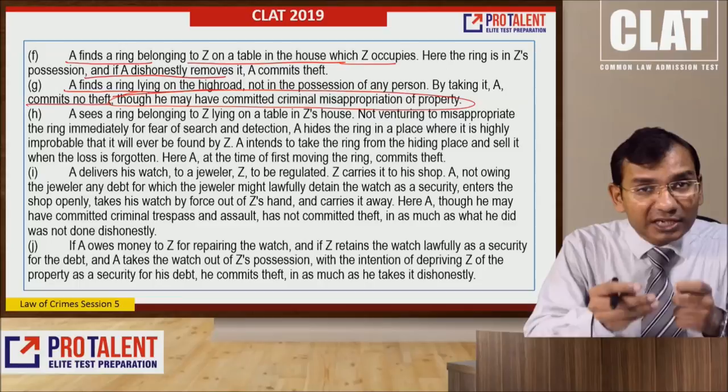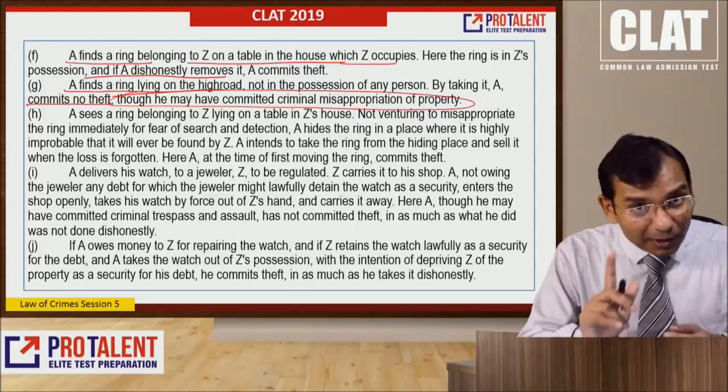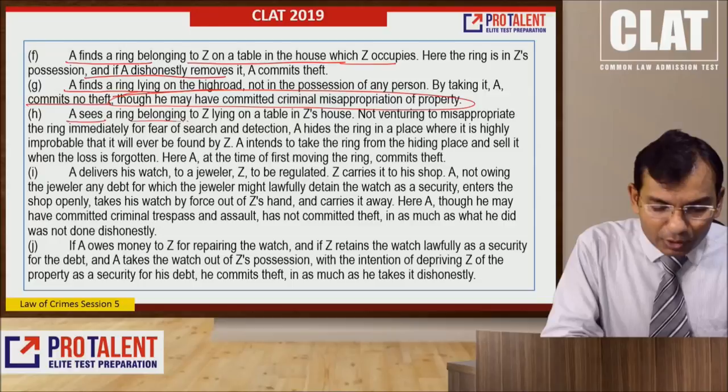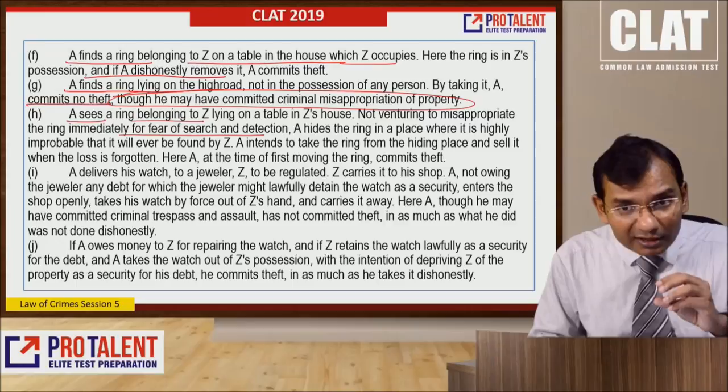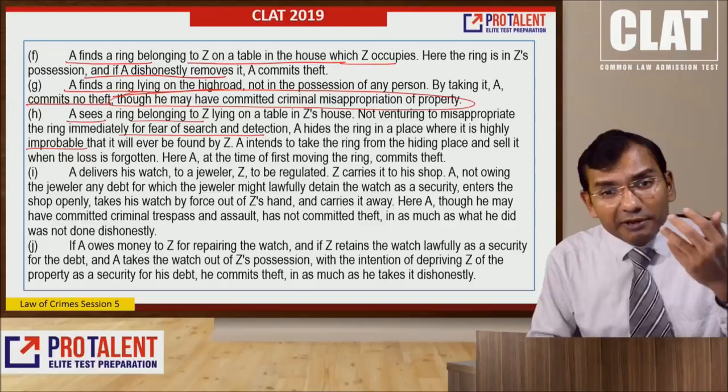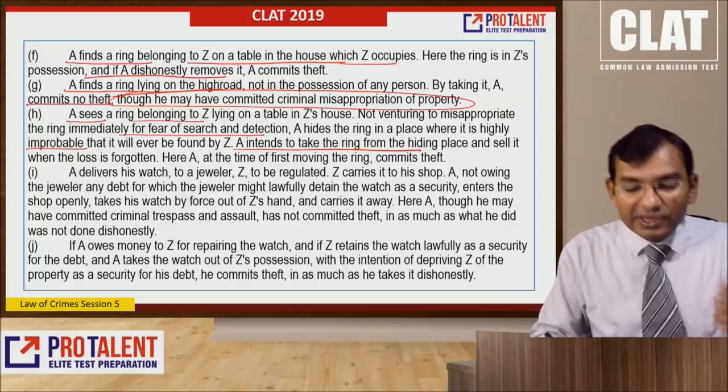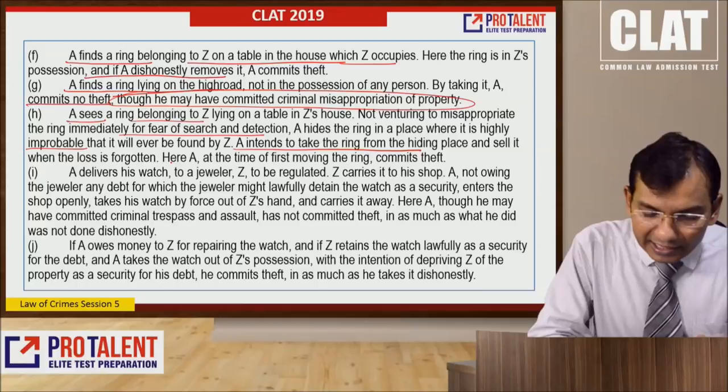A finds a ring lying on a high road, not in the possession of any person. By taking it, A has committed no theft, though he may have committed criminal misappropriation of property. A sees a ring belonging to Z on a table in Z's house. Not venturing to misappropriate it immediately for fear of search and detection, A hides the ring in a place where it is highly improbable it will ever be found by Z, intending to take it from the hiding place and sell it when the loss is forgotten. Here, at the time of first moving the ring, A has committed theft.